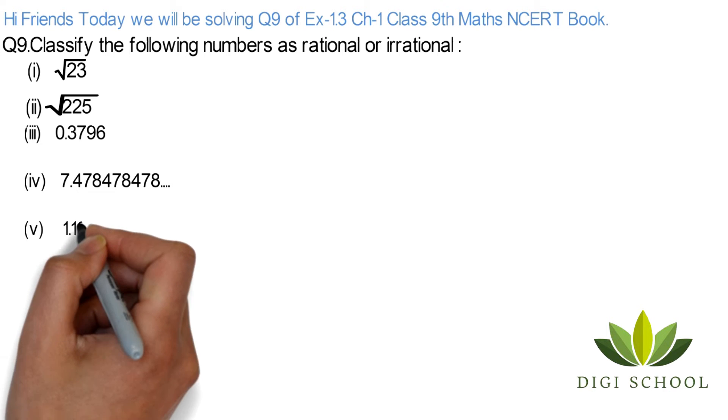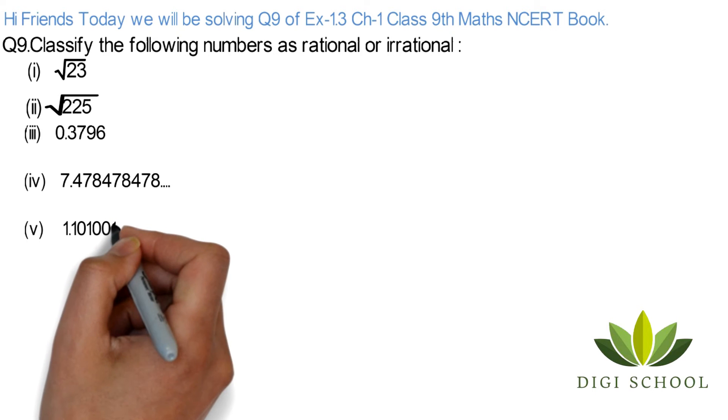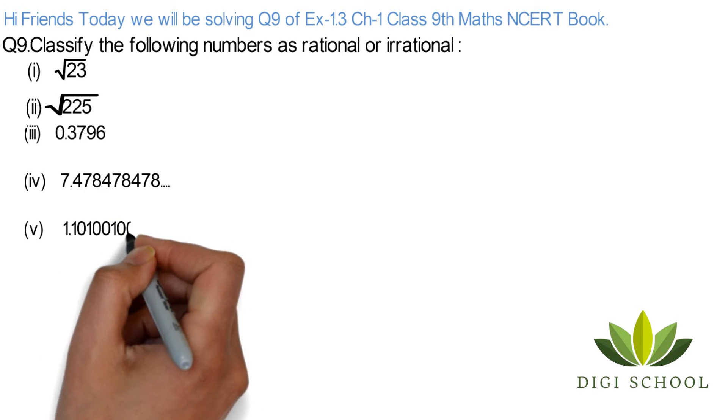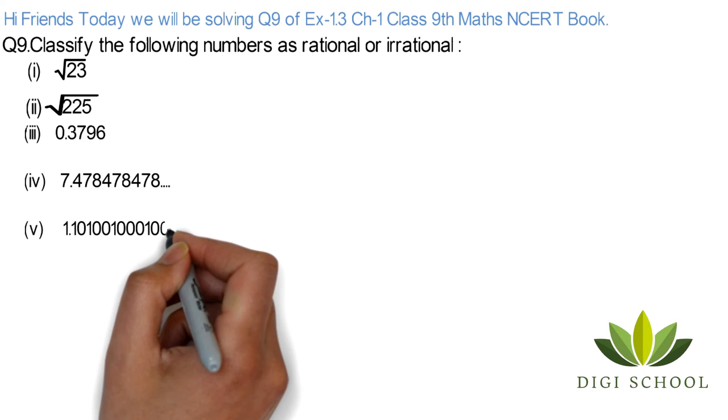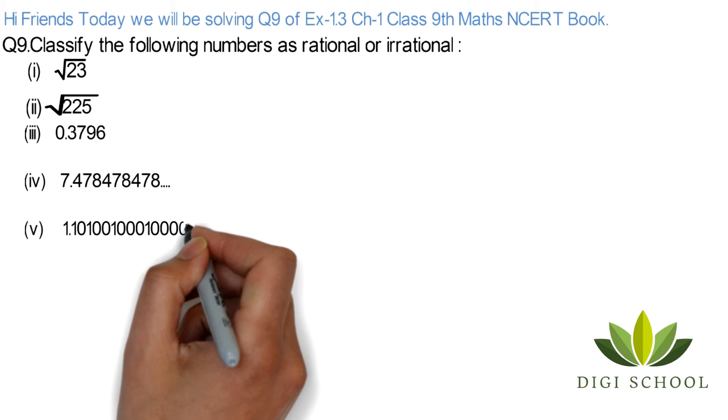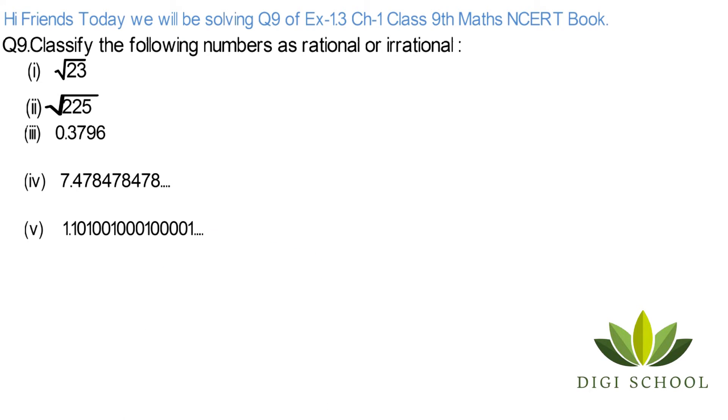Fifth one is 1.101001001001001 and so on. Every time the number of zeros increases.